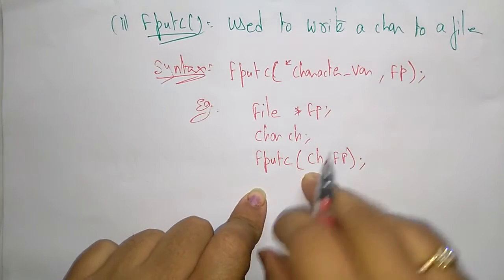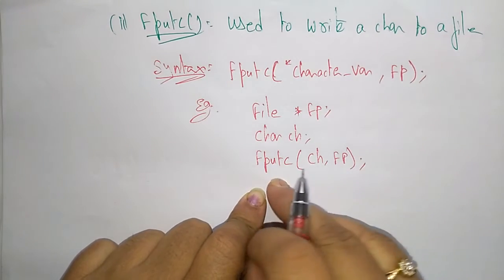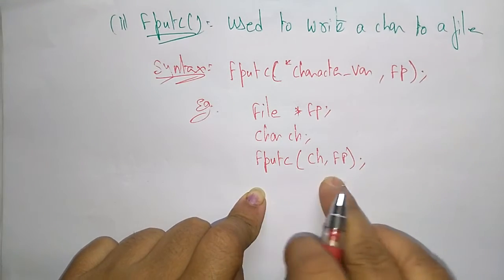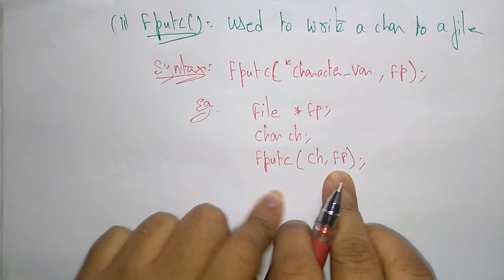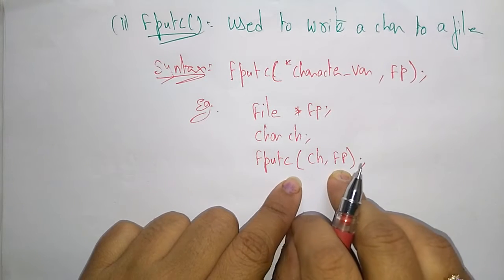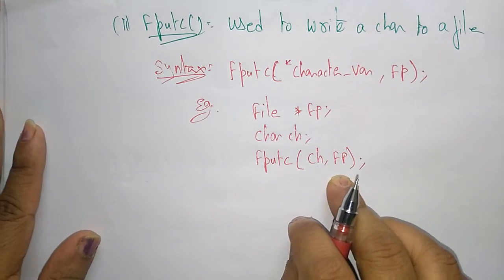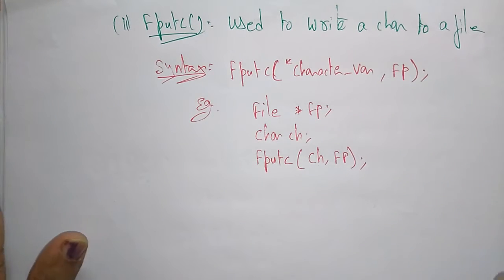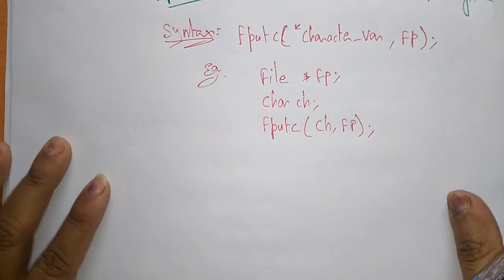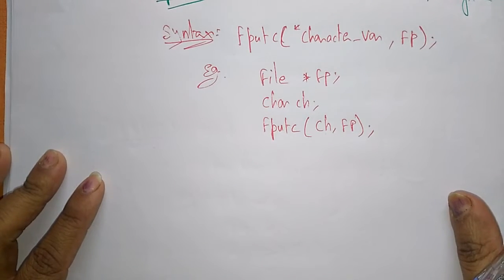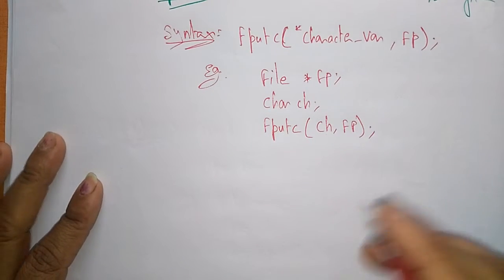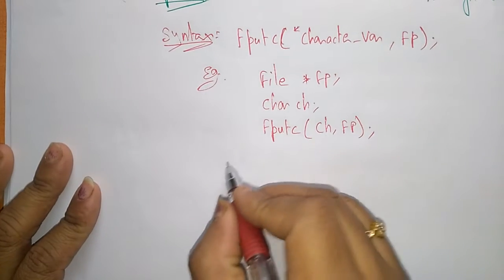Whatever character is present in the variable, it is written into the file at the location of the file pointer. So this covers the character I/O functions. Now let us see the formatted I/O functions.